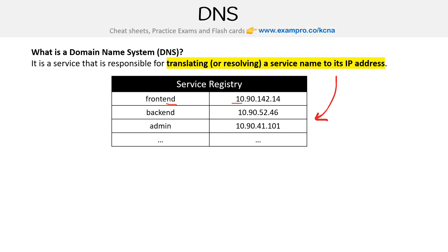The idea is that if you were to use that service name or registry, like with an HTTP request, or just use a tool that allows you to look up DNS records — like if you're trying to resolve where a front-end name would go — it resolves to that IP address.